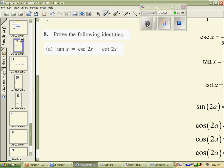Okay, now here we're looking at page 293, number 8a, where we are trying to prove that the tangent of x is equal to cosecant of 2x minus cotangent of 2x, regardless of what those x's are.